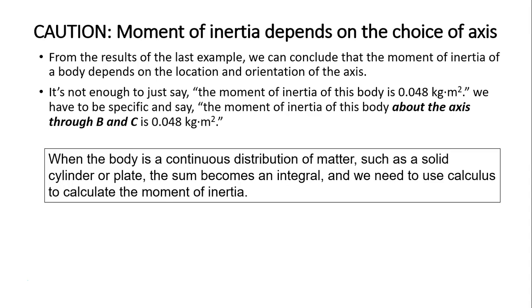The example we did is for discrete mass. You have different particles. What about if a body is continuous distribution, such as a baseball bat or a cylinder or a plate? Then this sum will become an integral. We'll need calculus to calculate moment of inertia in that case.